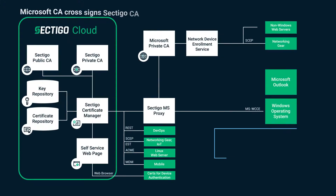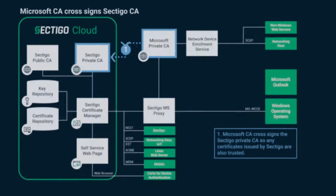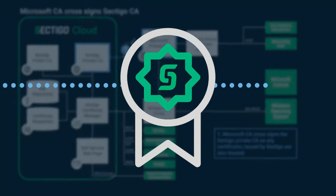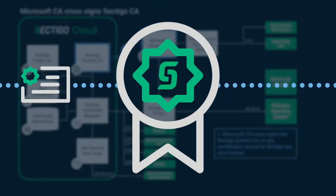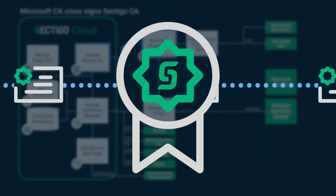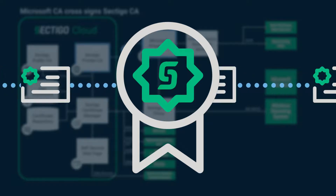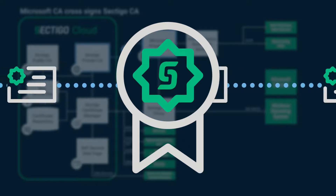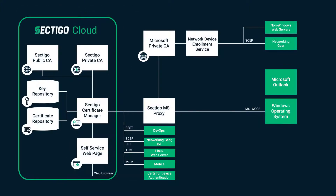The Sectigo Private CA can be made a subordinate of the customer premise Microsoft CA. This allows the enterprise to maintain physical control of the root, while eliminating the need to provision a new Sectigo Private root across the enterprise systems.